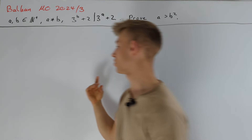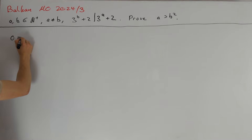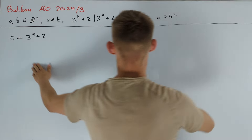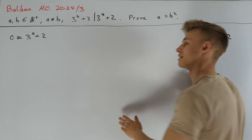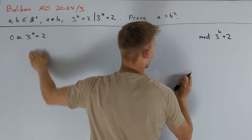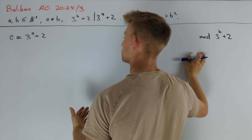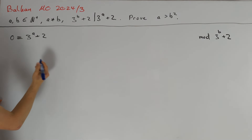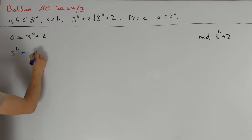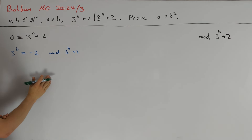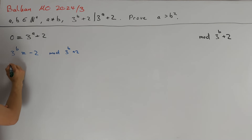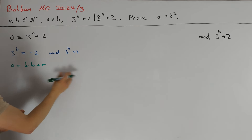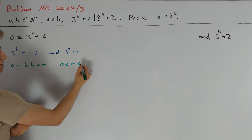Our divisibility condition can also be written in the form that 0 is congruent to 3 to the power of a plus 2, considering this modulo 3 to the power of b plus 2. Our first goal is to find a small representative for this value modulo 3 to the power of b plus 2. A key observation is that we can handle powers of 3 nicely because 3 to the power of b is congruent to minus 2. To apply this, we write a equals k times b plus r, where 0 is less than or equal to r less than b.